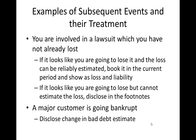Examples of subsequent events and their treatments: If you're involved in a lawsuit you have not already lost, and it looks like you are going to lose and the loss can be reliably estimated, book it in the current period as a loss and a liability. If it looks like you are going to lose but you cannot estimate the loss, disclose it in the footnotes. Another example: if a major customer is going bankrupt but has not yet done so, you disclose the fact that you have changed your estimate of bad debt.